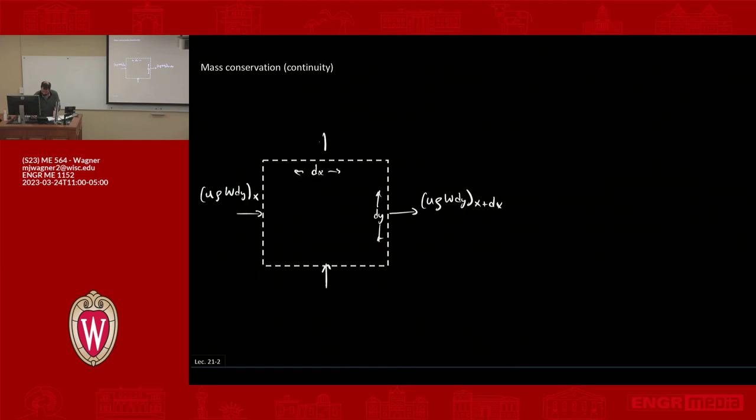Do the same thing in the y direction. We're going to have coming in here and leaving here the y component which is v times ρ times w times dx. w times dx is now my available area for flow, and that's evaluated at position y. At the top we have v ρ w dx at y plus dy.